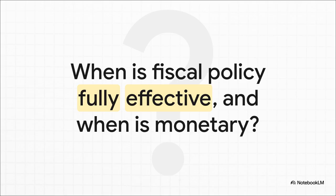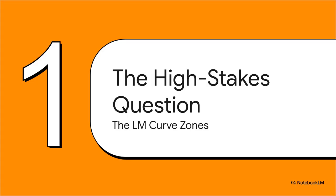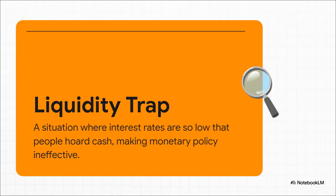It looks like a lot, right? But what it's really asking is pretty simple: how does the economy behave in two totally opposite extreme scenarios? Our whole goal here is to pull this question apart piece by piece and show you exactly how to build that perfect A-plus answer. First things first — before we can even touch those policy scenarios, we've got to lock down the absolute core concept. Everything hinges on this one key definition. So what exactly is a liquidity trap?